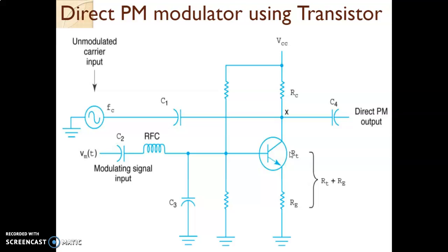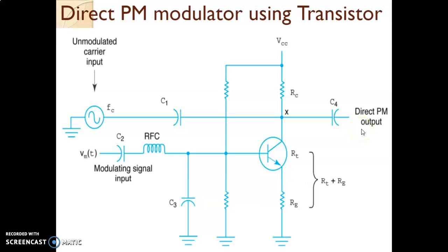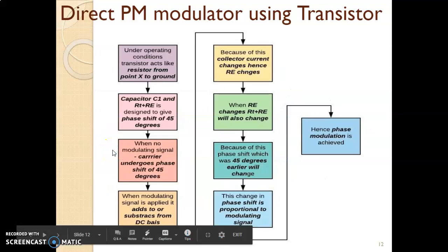The phase of the carrier signal is going to change in accordance with the modulating signal. When no modulating signal was there, the carrier was at a 45-degree phase shift. When the modulating signal is applied, RT and RE change, so the phase shift also changes. This phase shift is proportional to the modulating signal, and therefore at the output at point X, you get the direct phase modulated output. I have summarized this using a flow chart.